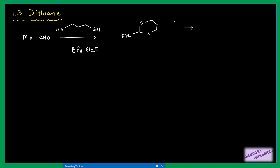Then we can use a base — generally butyl lithium is used, or LDA can be used. This base will remove an acidic proton. We know that the carbon carrying this proton is highly acidic because it is adjacent to two sulfurs. This will remove the proton and we will have a negative charge on this carbon, meaning we have a carbanion here.